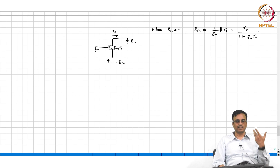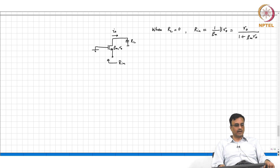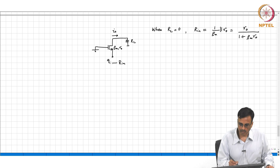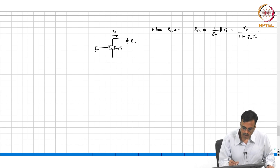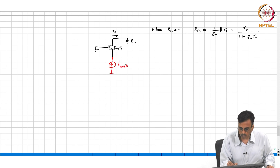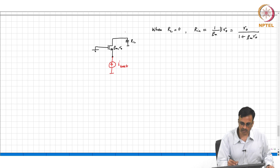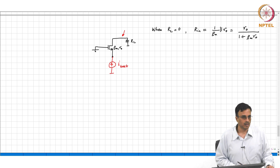RL is in series with the transistor, so it makes more sense to put a current source and measure the voltage. This is I_test. Regardless of the value of gm and R naught, the voltage across RL is simply I_test times RL — there is no doubt about that.